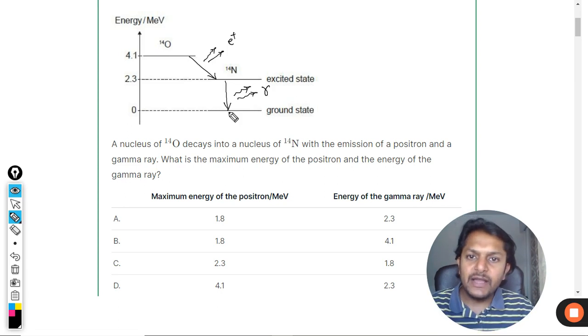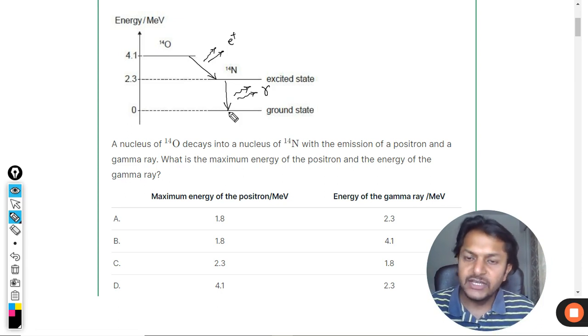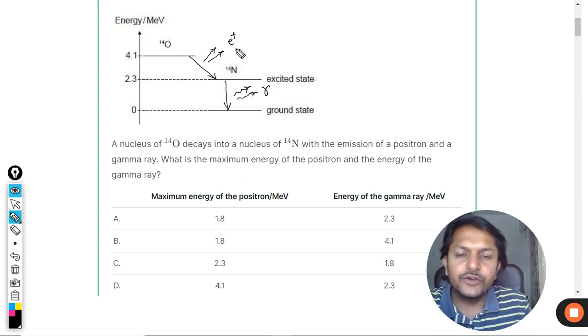It is always like that. Gamma is emitted only and only when the nucleus is in the excited state and it's coming down to the ground state. It means that the energy for the positron will be 4.1 minus 2...